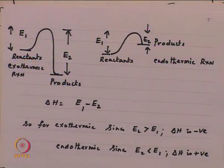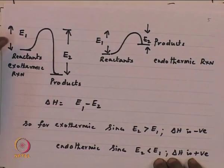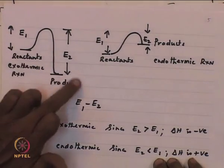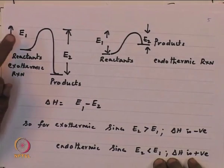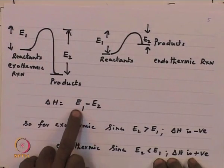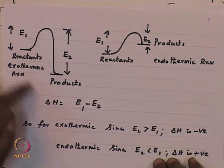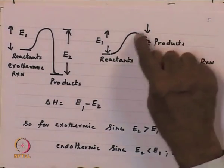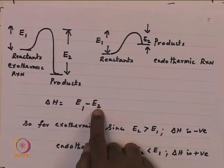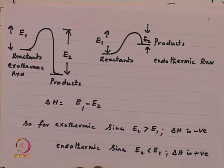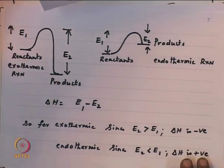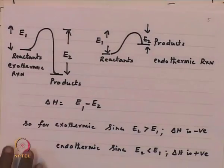For an exothermic reaction, the products are at a lower energy than reactants. Therefore E₁ minus E₂ is delta H; since E₂ is greater than E₁, delta H is negative — which is what we know. For an endothermic reaction, the products are at a higher energy than reactants, so E₁ minus E₂ is positive because delta H is positive. We can use all these relationships to understand our rate function R_B for exothermic and endothermic reactions.